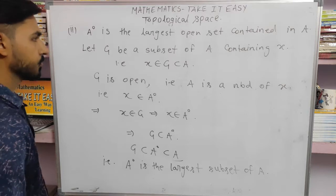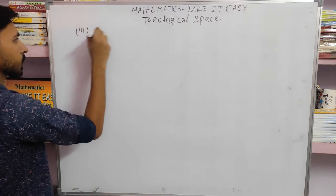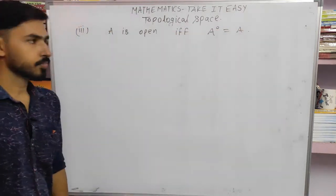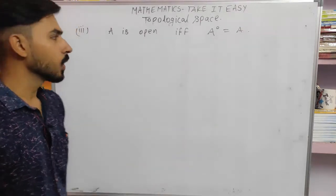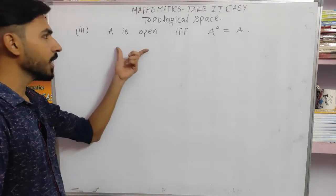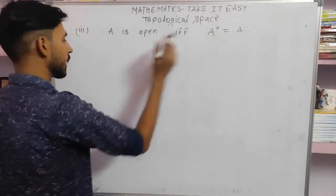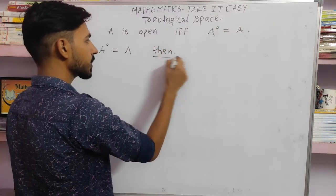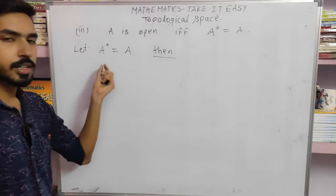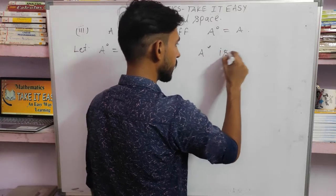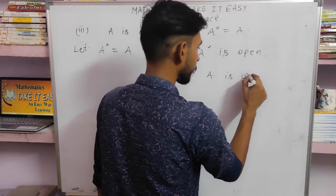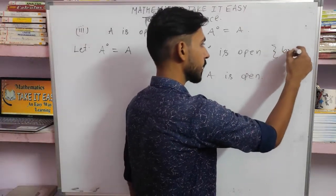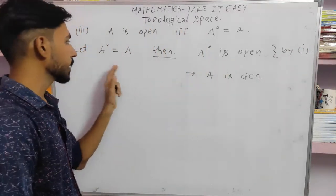Now let us discuss the third condition — we have to show that A is open if and only if A interior is equal to A. Firstly, let A interior be equal to A. From our first condition, we proved that A interior is open. So A interior is open implies A is open — since A interior equals A.